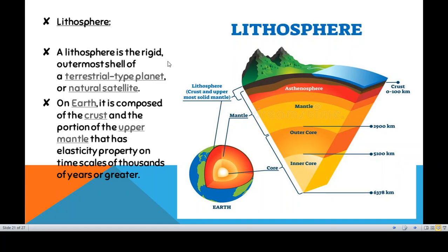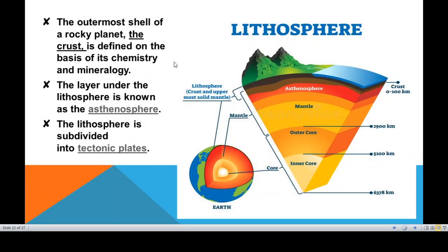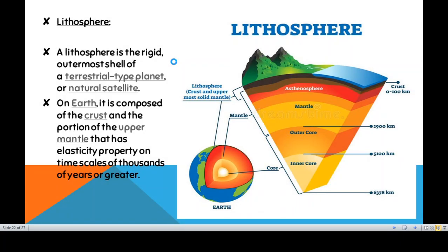We call our earth a terrestrial type of planet because there are different planets in the solar system. The ones closest to the sun — Mercury, Venus, Earth, and Mars — are called terrestrial planets. Terrestrial planets contain rocks, materials, and minerals. These do not work alone but rather in combination with gaseous material such as hydrogen, oxygen, helium, and nitrogen, as well as water. This combination of working is found in natural satellites only.